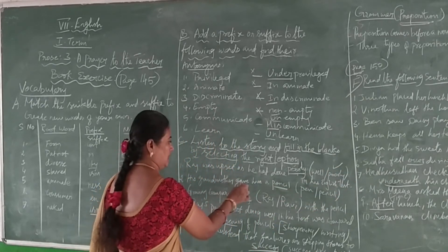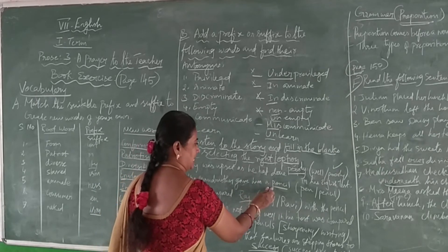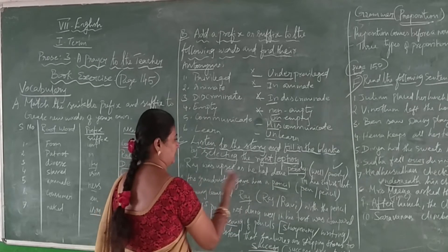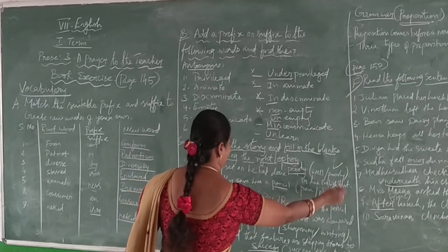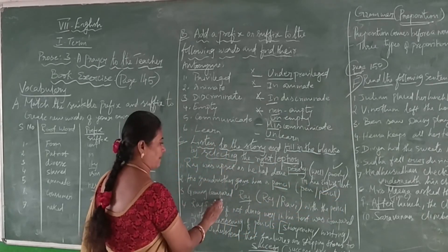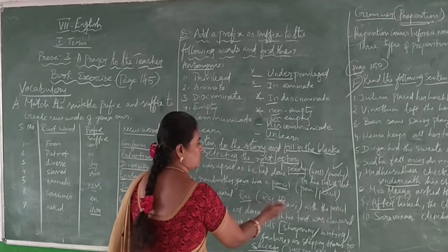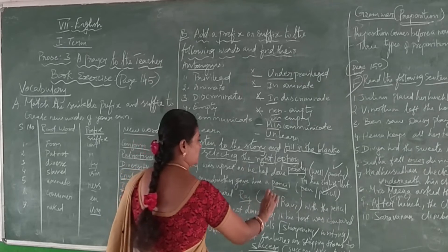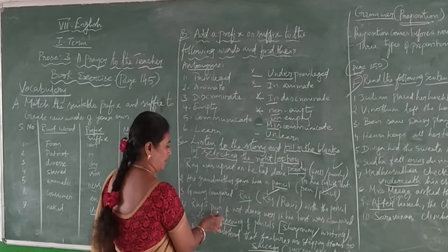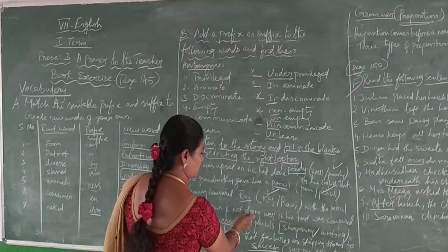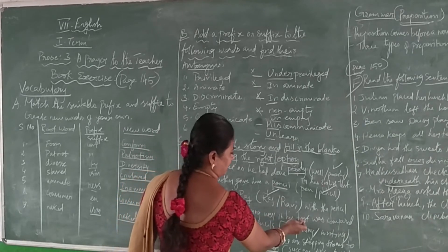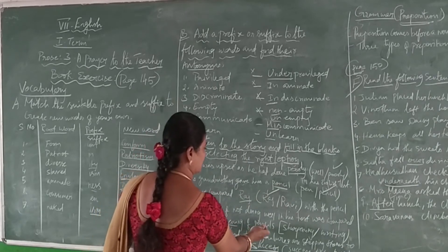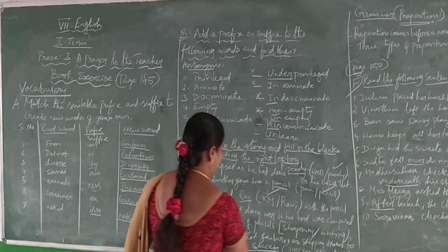Rauch was upset because he had acted poorly in his English test. So this is the correct option. Isa is the girl who gave him a pencil or pen. Isa is the girl who gave him the pencil. When he wrote with the pencil, he compared. Rauch compared with Isa.